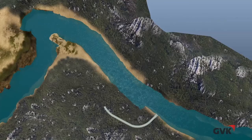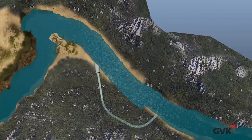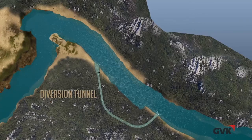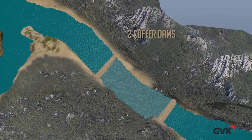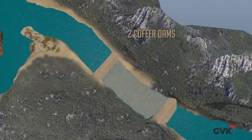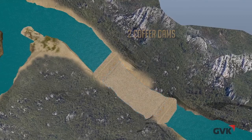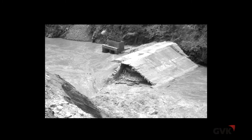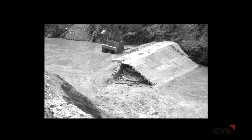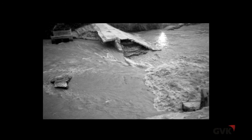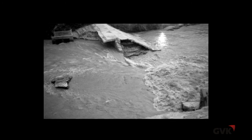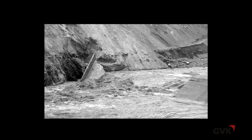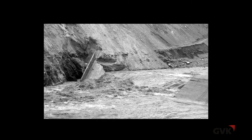The project started with the construction of a diversion tunnel and two coffer dams to divert the water flow and isolate the dam area. Every monsoon, when these coffer dams were washed out and the work got suspended for four months, it did not stop the construction process.